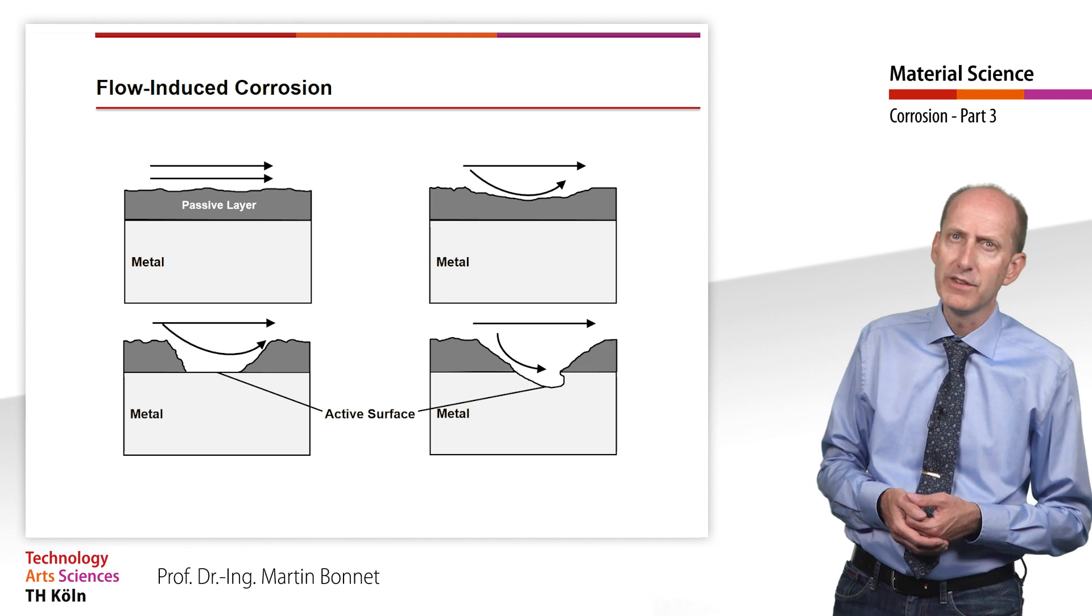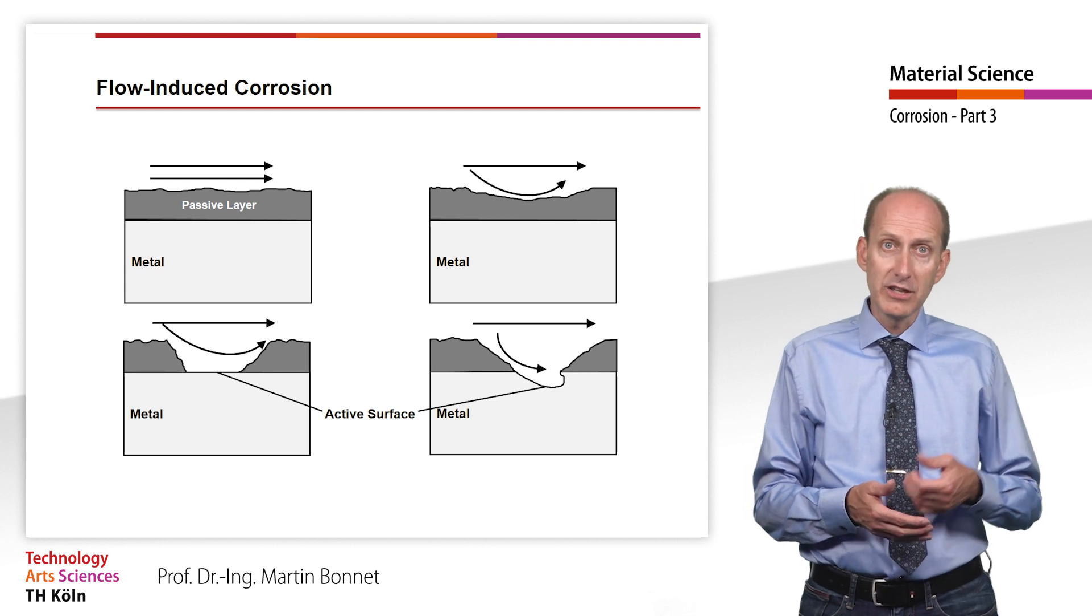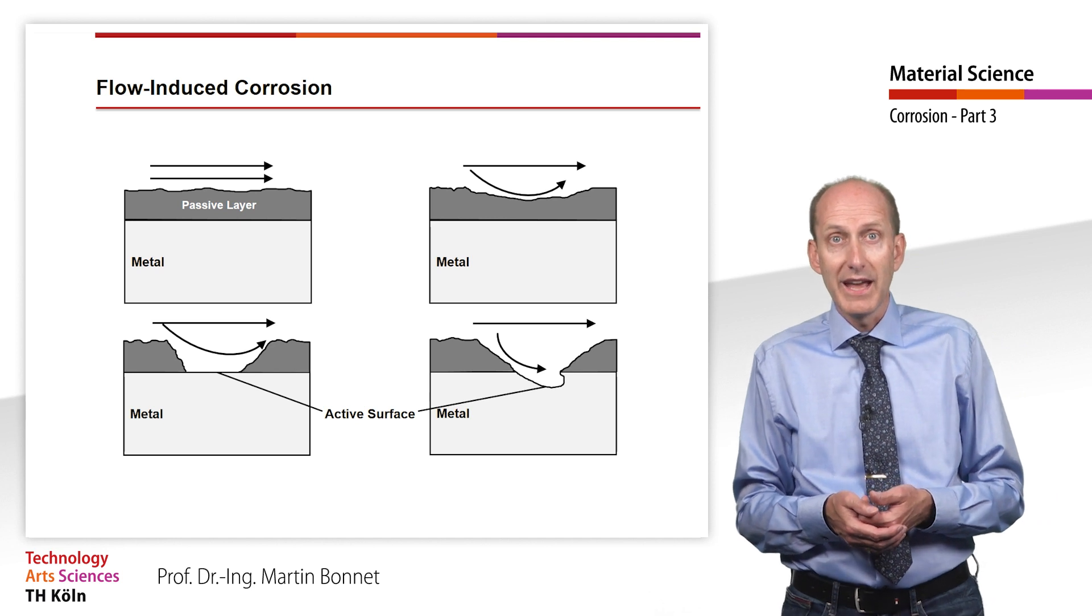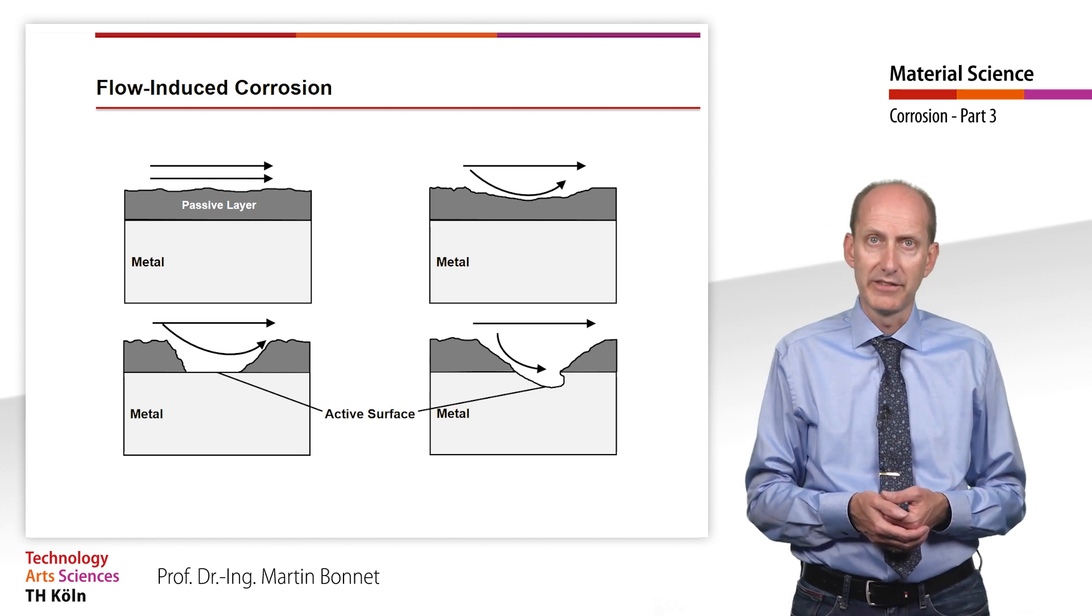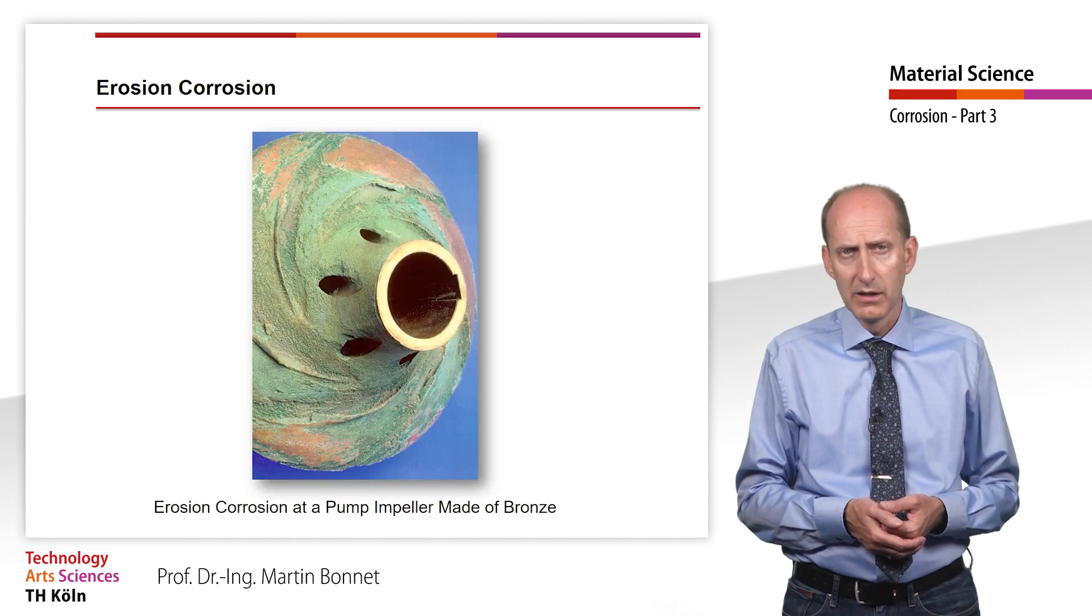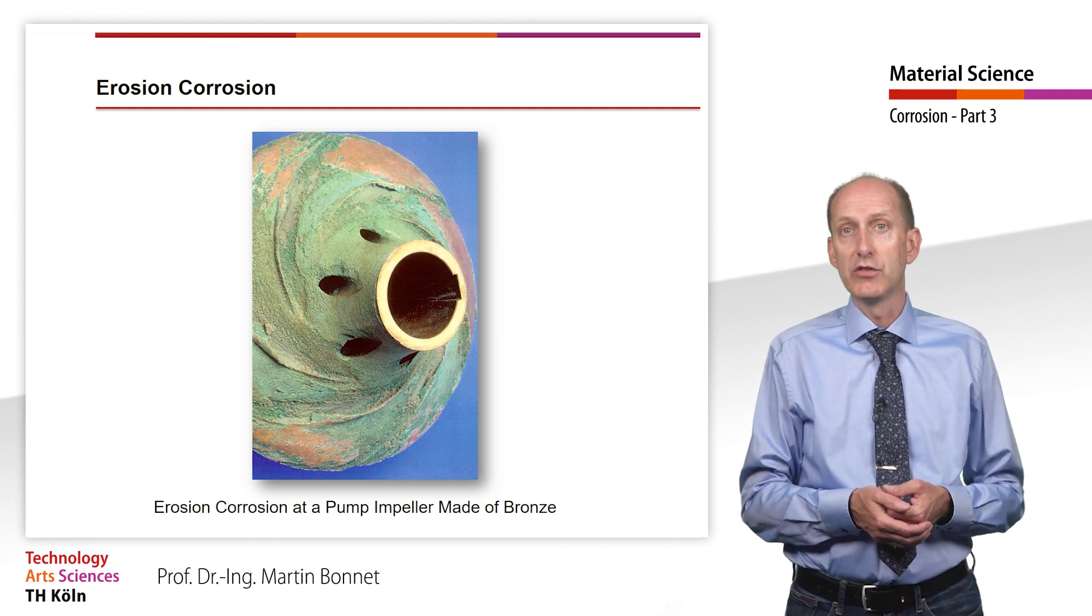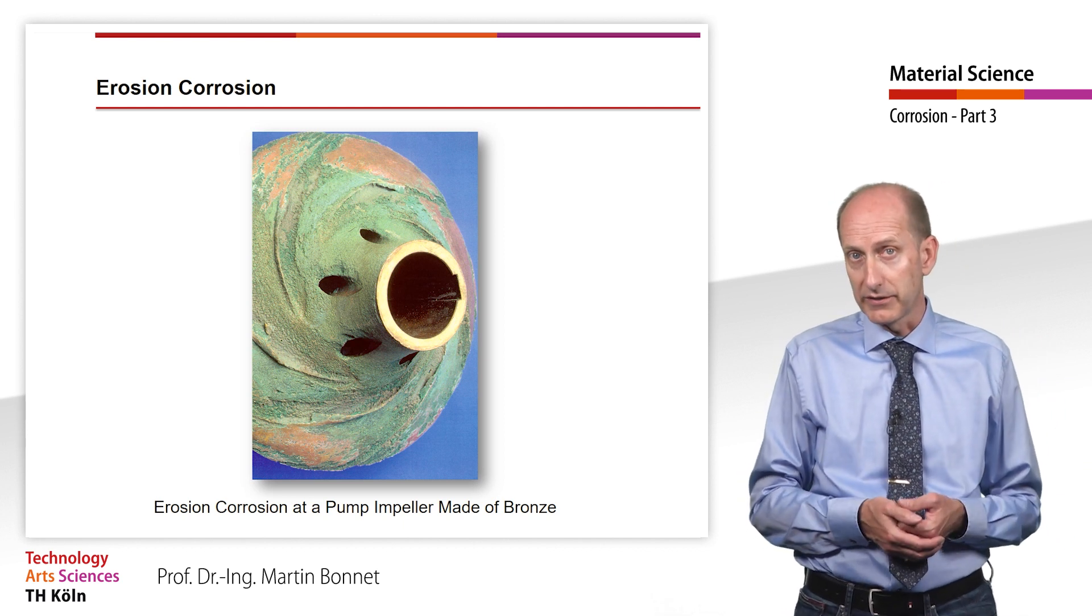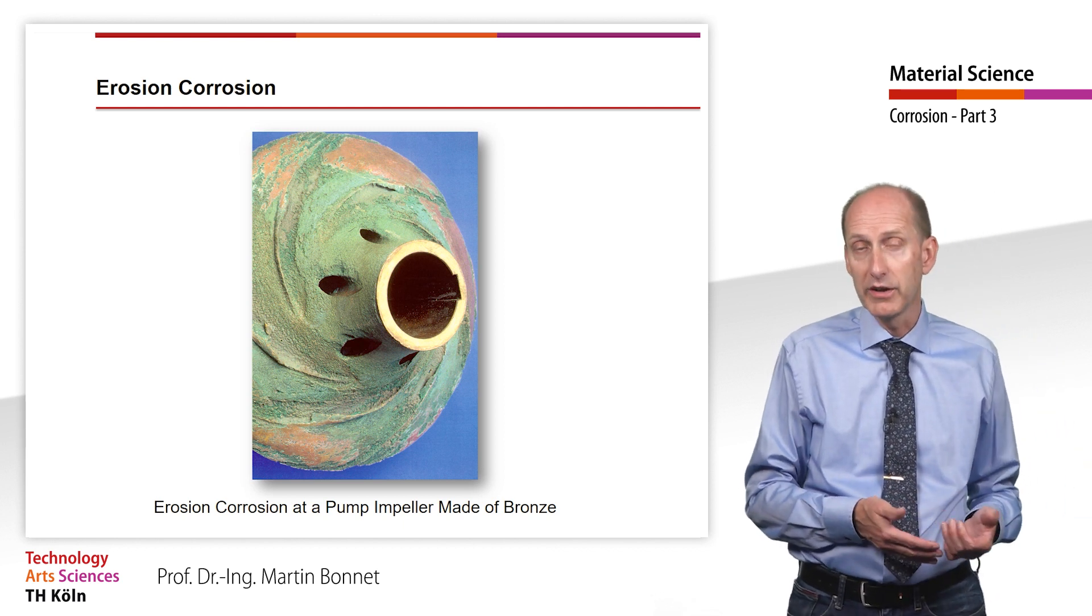At high flow rates, even otherwise less aggressive media can cause corrosion damage. Through an initially more or less mechanically induced erosion of the passive layer, and an additional shift in the chemical equilibrium through constant media exchange, damage can thus also occur to high alloy steel with the passive layer. In principle, any metallic material can be affected by erosion corrosion due to the material removal caused by high flow velocities and the associated turbulence. However, this effect is only pronounced in materials with the soft matrix, especially copper and copper alloys.